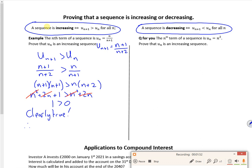So therefore, un plus 1 is greater than un for all n, and un is increasing.